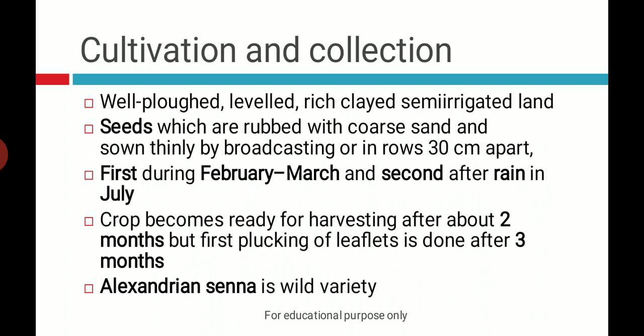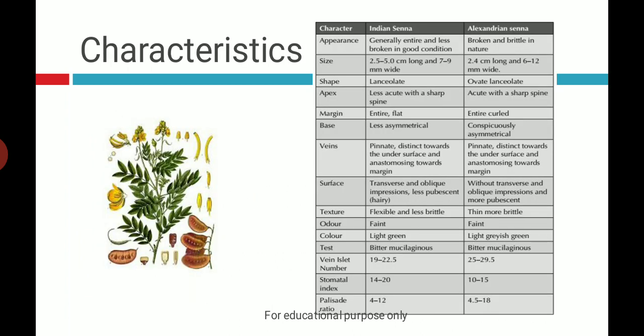Cultivation is done with the help of seeds, requiring well-ploughed, leveled, rich, clay semi-graded irrigated land. Sowing is done by broadcasting method or in rows 30 centimeters apart. First sowing is done in February or March, and the second in the rainy season in July. The crop is ready after two months for first plucking. Alexandrian Senna is a wild variety collected from the jungle.